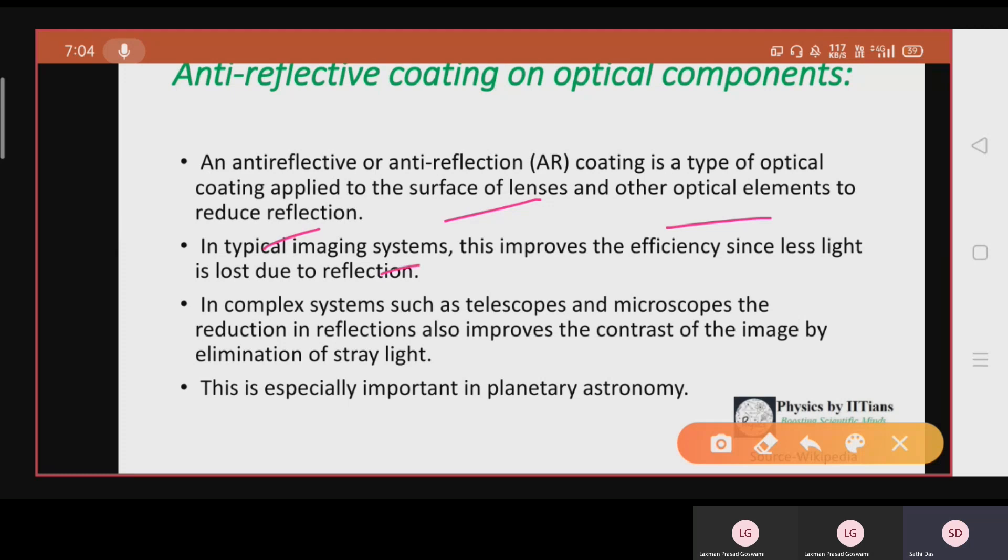In typical imaging systems, this improves the efficiency since less light is lost due to reflection. In complex systems such as telescopes and microscopes, the reduction in reflections also improves the contrast of the image by elimination of stray light. This is especially important in planetary astronomy. This is the anti-reflecting coating which will reduce the reflection.